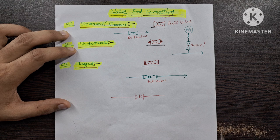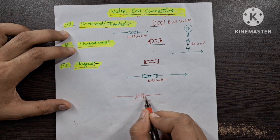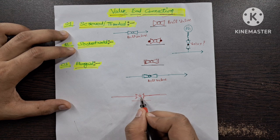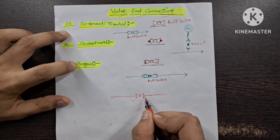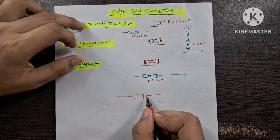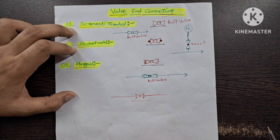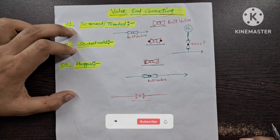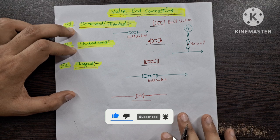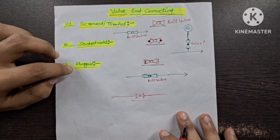What is the meaning of end connection? End connection means this is your one valve, and it is connected with the pipeline. This valve could be connected with the pipeline with the help of a flanged end connection, socket welded end connection, or screwed/threaded end connection. There are other types as well, for example wafer type, but mainly the commonly used valve end connections are screwed, socket welded, and flanged.